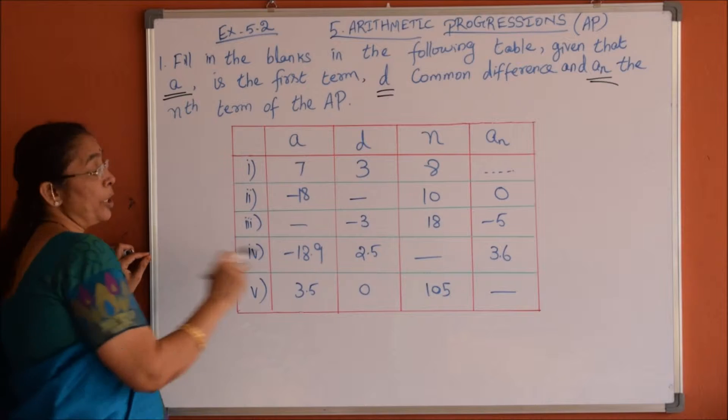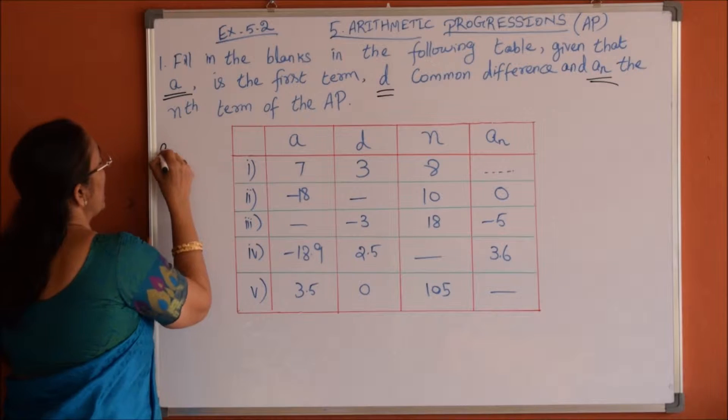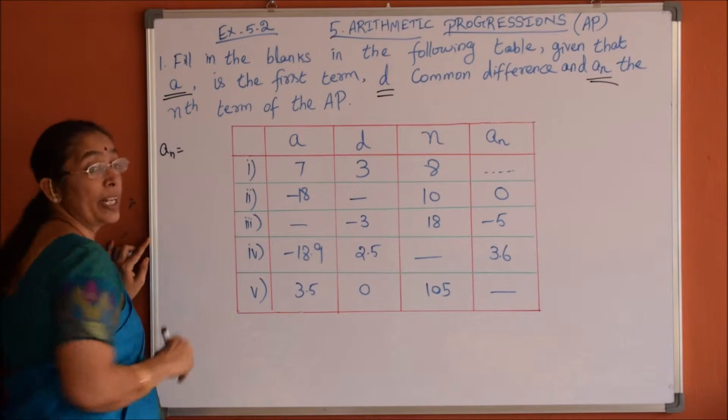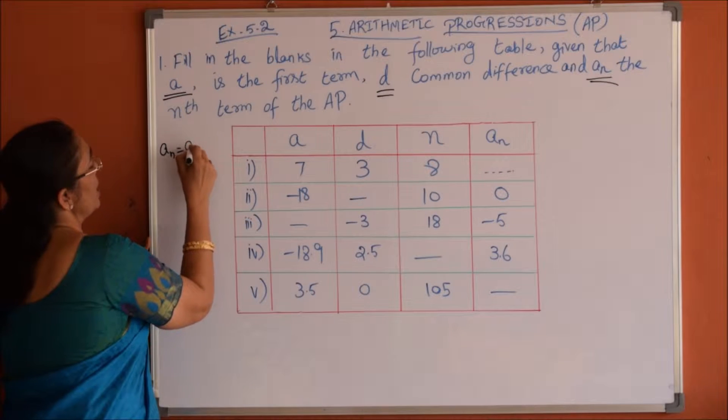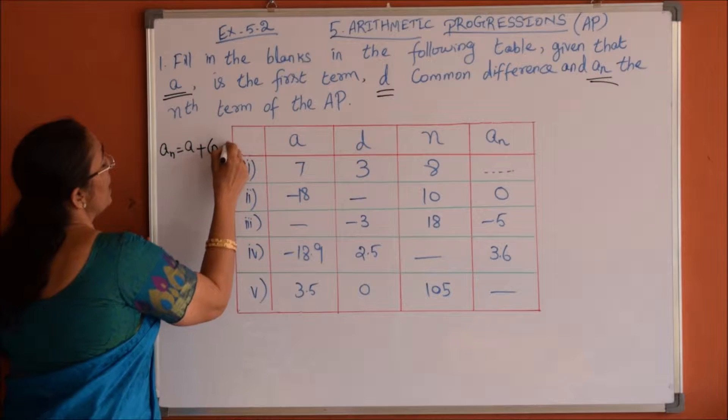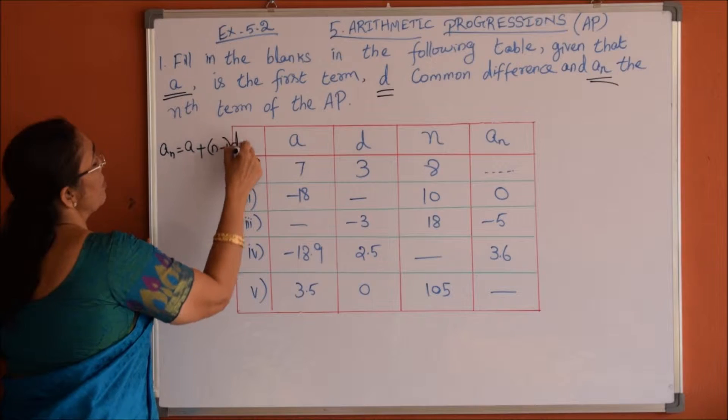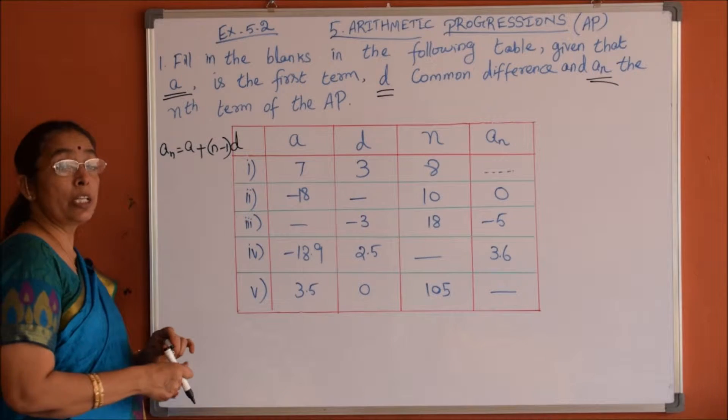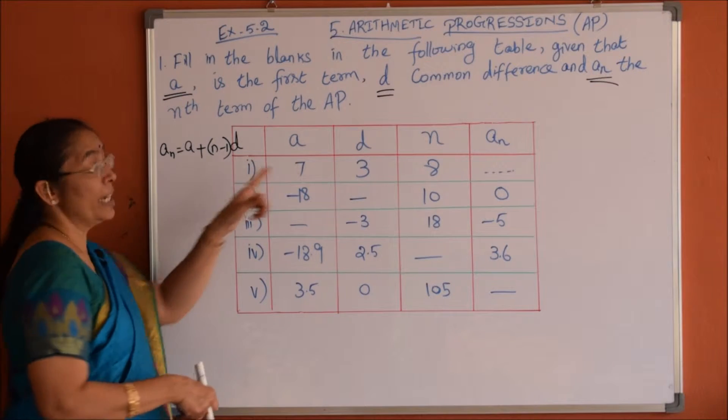The formula we are going to use to fill this table is An equals a plus (n minus 1) times d, where An is the nth term of an AP, a is the first term, and d is the common difference. Using this formula, we find all the required terms.